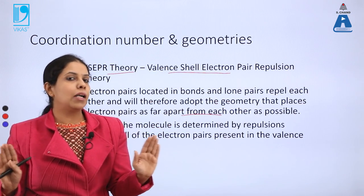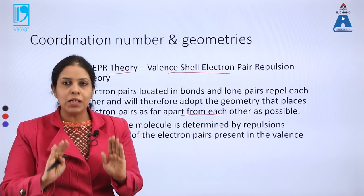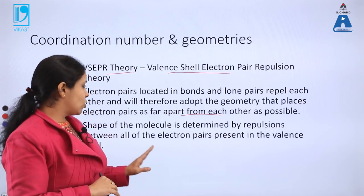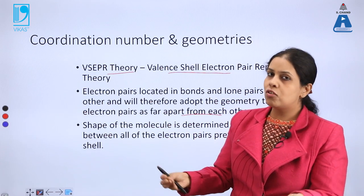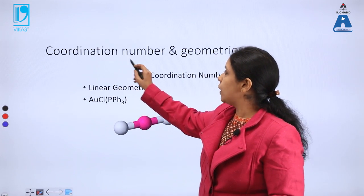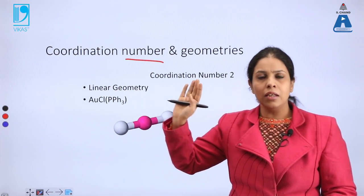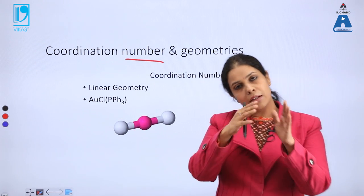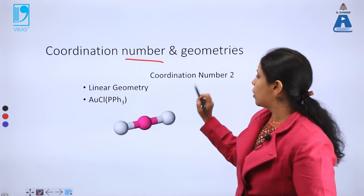If electron pairs and lone pairs are at maximum distance apart, they will not repel each other and interaction between them will be less. The shape of the molecule is determined by repulsion between all of the electron pairs in the valence shell — whenever they attain maximum distance apart, that defines what shape that particular coordination number compound will have. Higher coordination compounds are very rare because of steric hindrance.